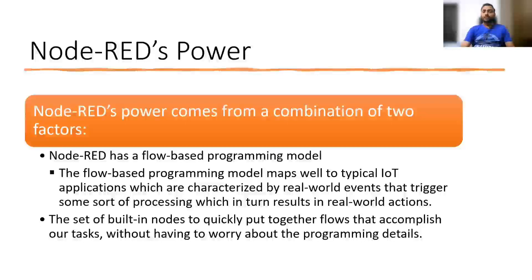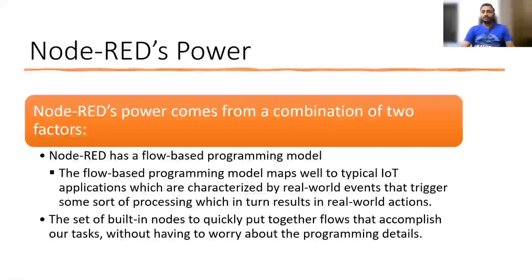The power of Node-RED comes from the combination of two factors. First, it is based on a flow-based programming model, which is useful for typical IoT applications where we want to perform some action based on certain events. Second is the built-in nodes — there are various nodes available. For example, if you want to get tweets from Twitter, there are built-in nodes for that. Whenever you want to create a custom function, you can create a node. You can even set up an MQTT broker client using built-in nodes or imported libraries.